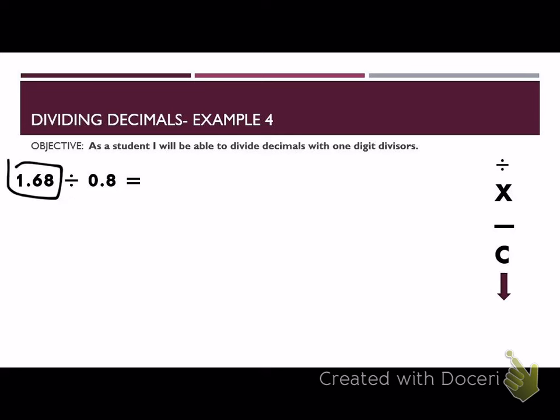This number is the first one. We're going to go ahead and put it inside the box. 1.68. On the outside is 8 tenths. You move your decimal one time to get it to the wall on the outside. If you do it on the outside, you must also do it on the inside. You can go ahead and put your decimal on top.